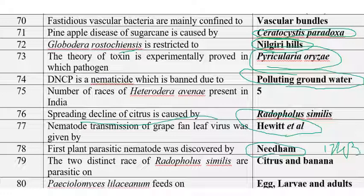The two distinct races of Radopholus similis are parasitic on citrus and banana. Paecilomyces lilacinus is a biocontrol agent which feeds on eggs, larvae, and adults of nematodes.